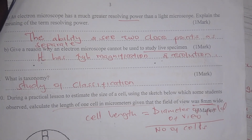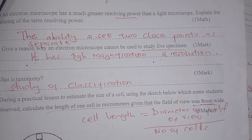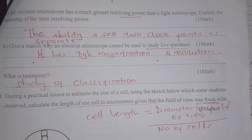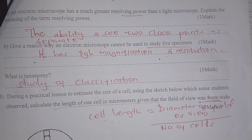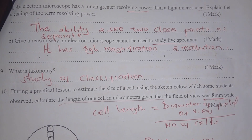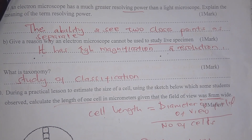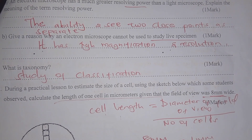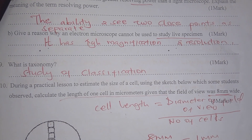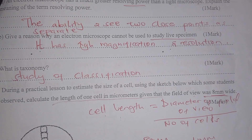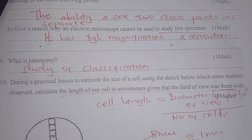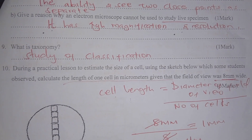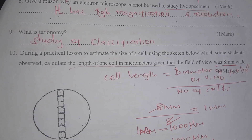An electron microscope has much greater resolving power than a light microscope. Explain the meaning of resolving power — that is the ability to see two close objects or two close points as separate. Give a reason why an electron microscope cannot be used to study living specimens — it has very high magnification and very high resolution.